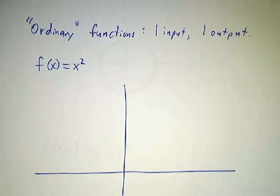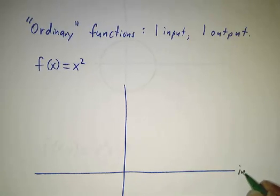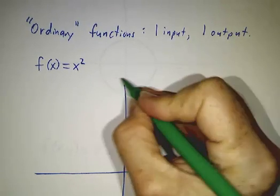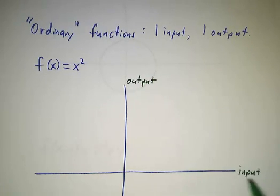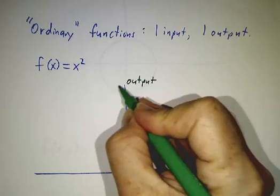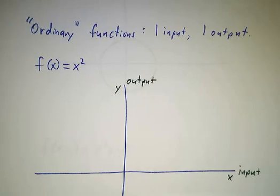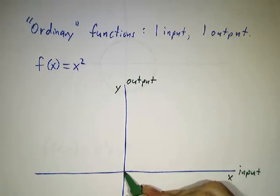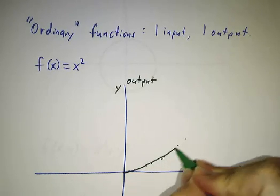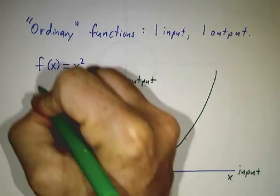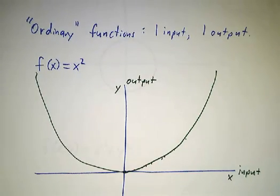And you probably are also thinking of a picture of that function, and you get a picture of that function by making one axis be the input, the other axis be the output. We usually call the input x and we usually call the output y, and then we take all possible values of our input, and we feed them to the function, and we see what kind of output we get, and lo and behold, we get a curve.